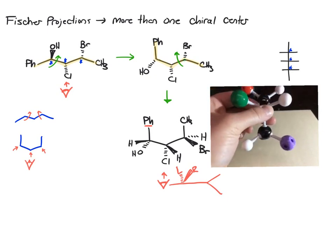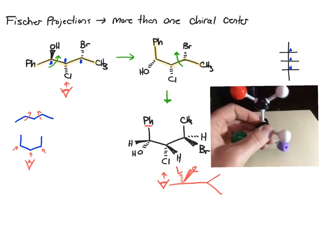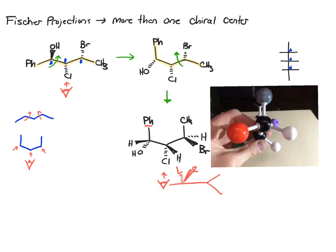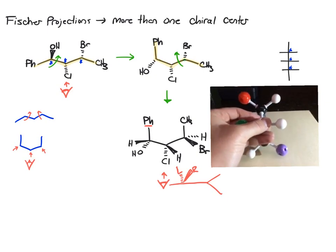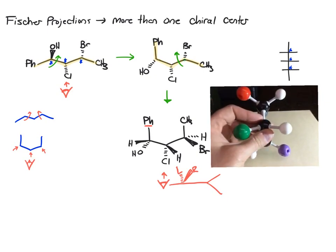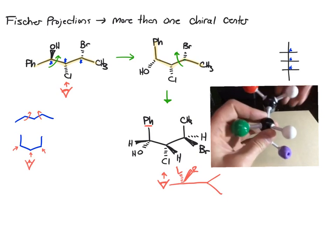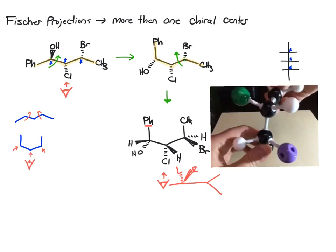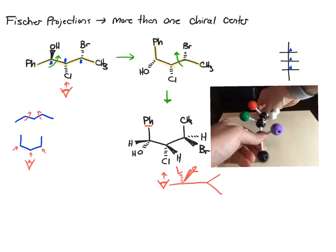So that's why this fulfills the definition of the Fischer projection - if you look from that bottom side, all of these groups are in the right orientation. So then to draw the Fischer projection, you just kind of think about flattening this out. From here, things are fairly straightforward.